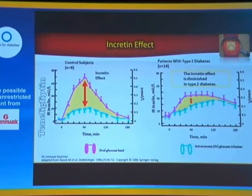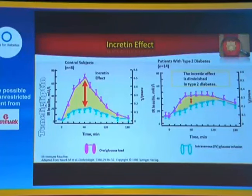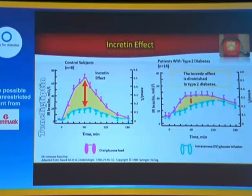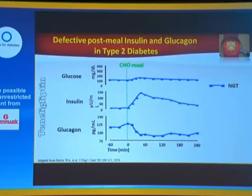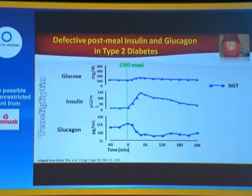To wrap up the physiology: what is this incretin effect? It is an extra insulin secretion whenever you get a glucose load in the GIT compared to a glucose load in the intravenous system. That means God has planned it such that the GIT would respond much more than any other route of glucose entry into the body, and this is mediated through the incretins. Whenever you compare glucose, insulin, and glucagon in a normal individual after a carbohydrate meal, glucose goes up slightly on the higher side, mainly because of insulin secretion and the suppression of glucagon.